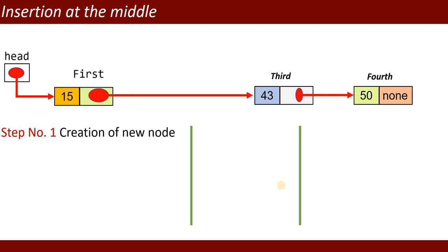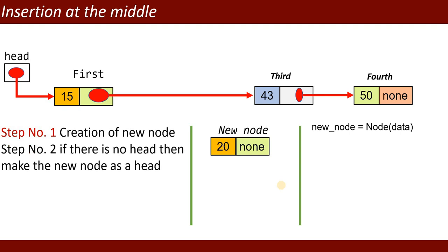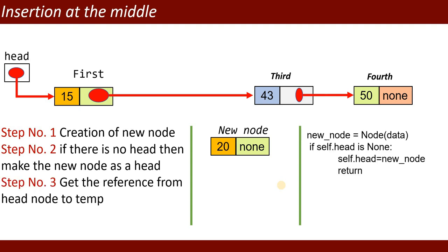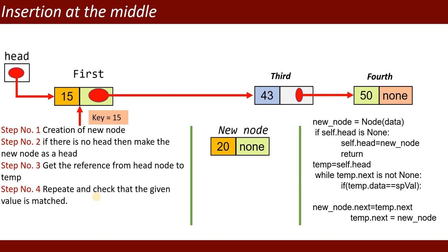For insertion at the middle, step one is creation of a new node — suppose you want to insert value 20. Step two: if there is no head, make the new node the head. Step three: get the reference from the head node into temp. Step four: repeat and check if the given key value matches. Suppose you want to insert after the item with value 15 — when the key matches, proceed.